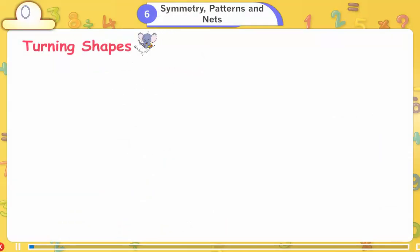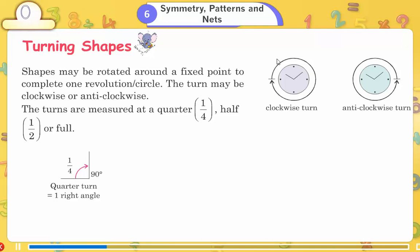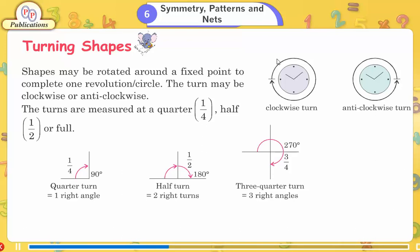Turning shapes. Shapes may be rotated around a fixed point to complete one revolution or circle. The turn may be clockwise or anticlockwise. The turns are measured at a quarter (1 by 4), half (1 by 2), or full. Quarter turn is equal to 1 right angle, 1 by 4, 90 degrees. Half turn is equal to 2 right angles, 1 by 2, 180 degrees. Three quarter turn is equal to 3 right angles, 3 by 4, 270 degrees. One full turn is equal to 4 right angles, 360 degrees.